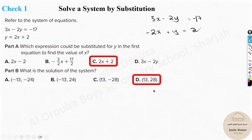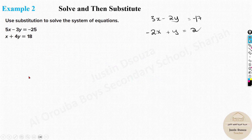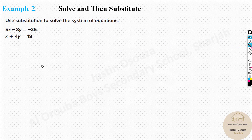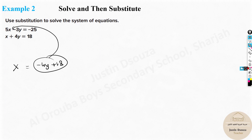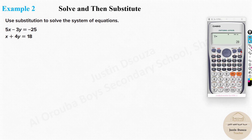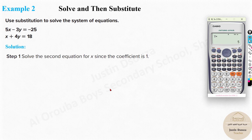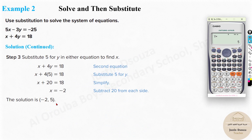The first part was C and this is D — that's how we solve it easily. For the next problem, please try it by yourselves first. When doing substitution, look for the easier equation. This one has coefficients on both x and y, but this one has no x term, so I'll isolate x: x equals negative 4y plus 18, which can then be substituted into the other equation. Using the calculator to check: coefficients are 5, negative 3, negative 25 and 1, 4, 18. The answer is negative 2 and 5, which is correct.